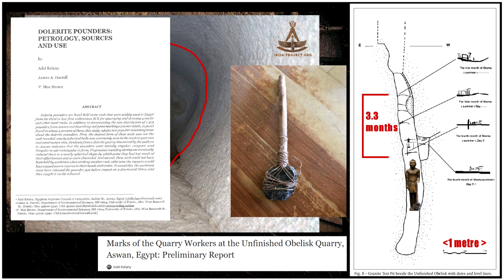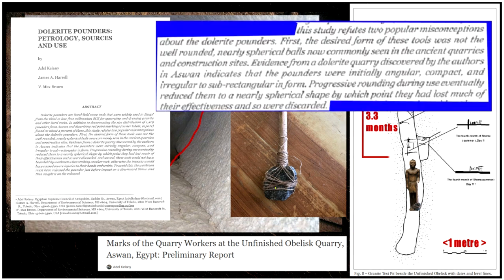There's another point I want to make. Adele Kalani has done a lot of work regarding quarrying, along with Pierre Stormmeyer and others. In this paper he points out exactly what I was suggesting in the last video. The abstract states: this study refutes two popular misconceptions about the dolerite pounders. First, the desired form of these tools was not the well-rounded nearly spherical balls commonly seen in ancient quarries. Evidence from a dolerite quarry at Aswan indicates the pounders were initially angular, compact, and irregular to sub-rectangular in form.